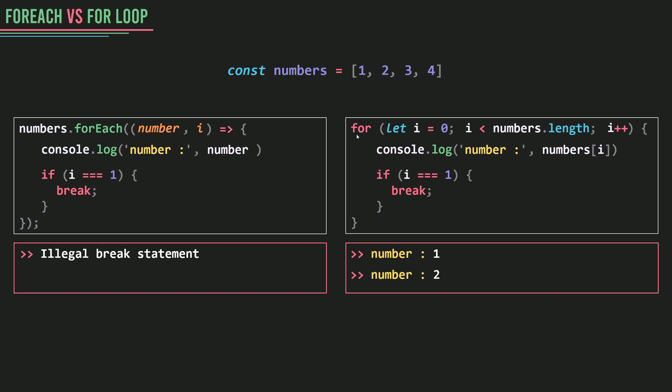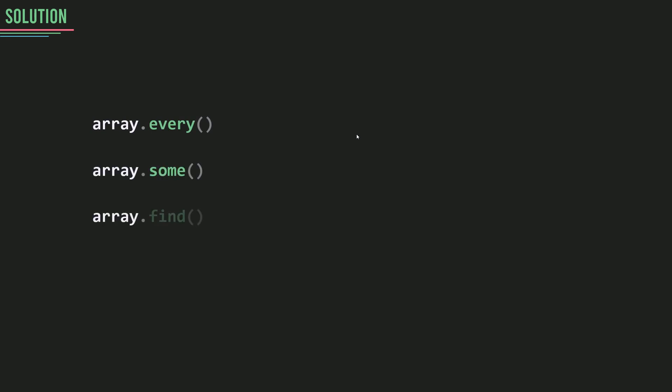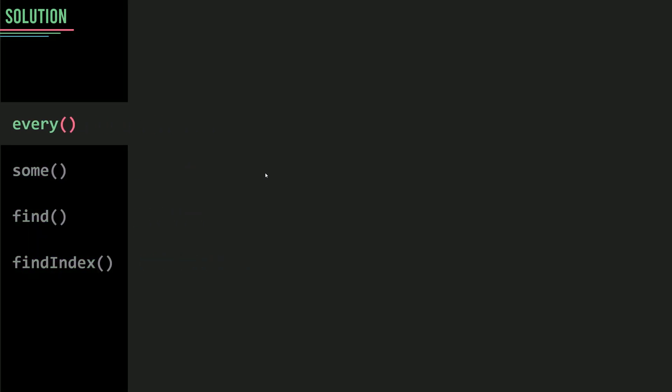Let's see how we can work around this issue — how we can use the break statement inside a forEach. To do that, I'm going to use some other methods that are similar to forEach: every, some, find, and findIndex. These methods all iterate through your array elements one by one, making them exactly like forEach but with the ability to break out of the loop.